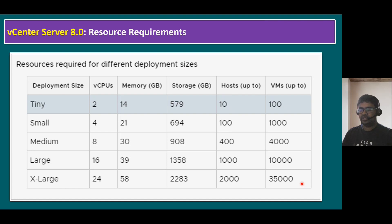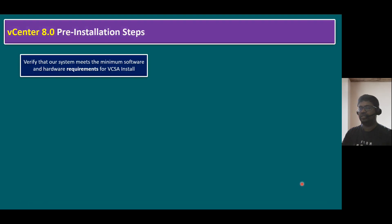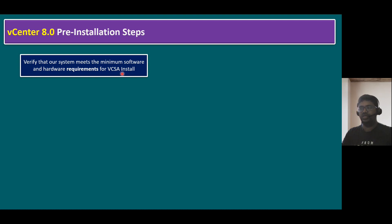Now let's talk about vCenter Server 8.0 pre-installation steps. Before installing, first verify that your system meets the minimum software and hardware requirements for the vCenter Server Appliance install. In our lab system, we have three ESXi hosts, and we are going to choose one of them to install the vCenter server. Let's log into our lab system to validate the minimum hardware requirements.